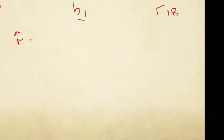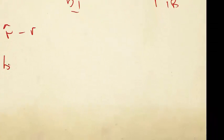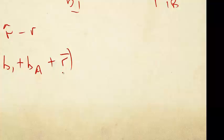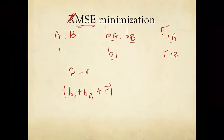Let's say we write out r_hat minus r. That is b_1 plus b_A plus r_bar - this is our prediction, r_hat of 1A minus the actual r_1A.